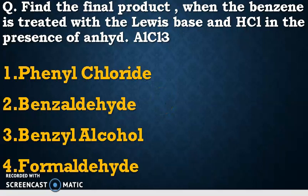In the question, benzene reacts with a Lewis base. We can take the Lewis base as CO — that means carbon monoxide — and HCl in the presence of anhydrous AlCl₃. You will get the final product. Benzene reacting with carbon monoxide and HCl with the catalyst anhydrous AlCl₃ — this reaction is related to the Gattermann-Koch reaction, studied in 12th standard. This reaction has a three-step mechanism.